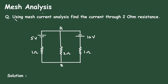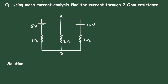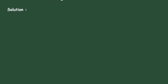Mesh Analysis Question. Using mesh current analysis, find the current through the 2 Ohm resistance. Here in this circuit, we have to find the current through this 2 Ohm resistance by using mesh analysis method. Let us solve this circuit solution.